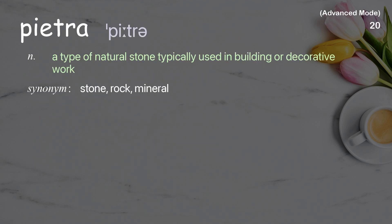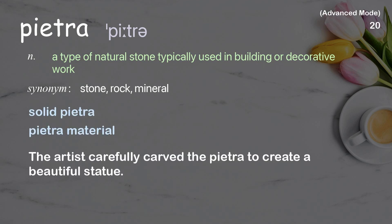Pietra: A type of natural stone, typically used in building or decorative work. The artist carefully carved the pietra to create a beautiful statue.